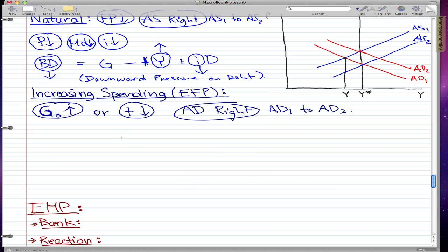And let's continue. So aggregate demand moves to the right. And we see that the price has risen. The price rises. And immediately, we know what happens to the interest rate and the money demand. They also rise.